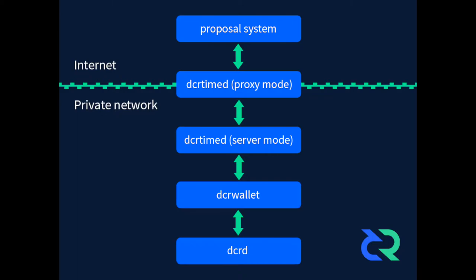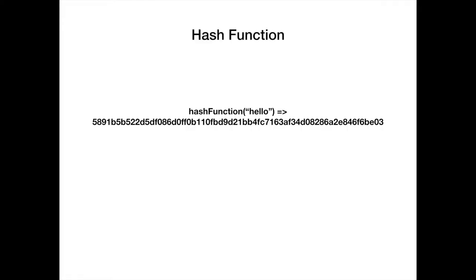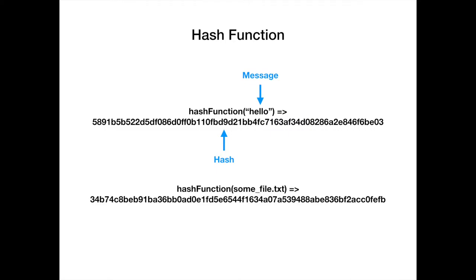In order to understand how DCRtime works, we need to dive into some cryptography basics. First up is a hash function - a function that takes an arbitrary size of data and maps it to a fixed size of data. You may have heard these referred to as hash algorithms or hashing algorithms; they're all the same thing. Basically you have an input and an output. The input can be however big or small you want, but the output will always be the same size. The input is called a message and the output is called a hash. In the case of the SHA-256 hash function, the hash is always going to be 64 characters long.